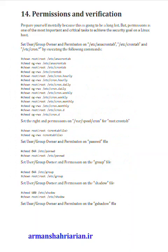Step 14: Permissions and verification. This is going to be a long list, but permissions is one of the most important and critical tasks to achieve the security goal on a Linux host. Set user/group owner and permissions on /etc/anacrontab, /etc/crontab, and /etc/cron.* by executing: chown root:root /etc/crontab, and chown root:root /etc/cron.hourly.